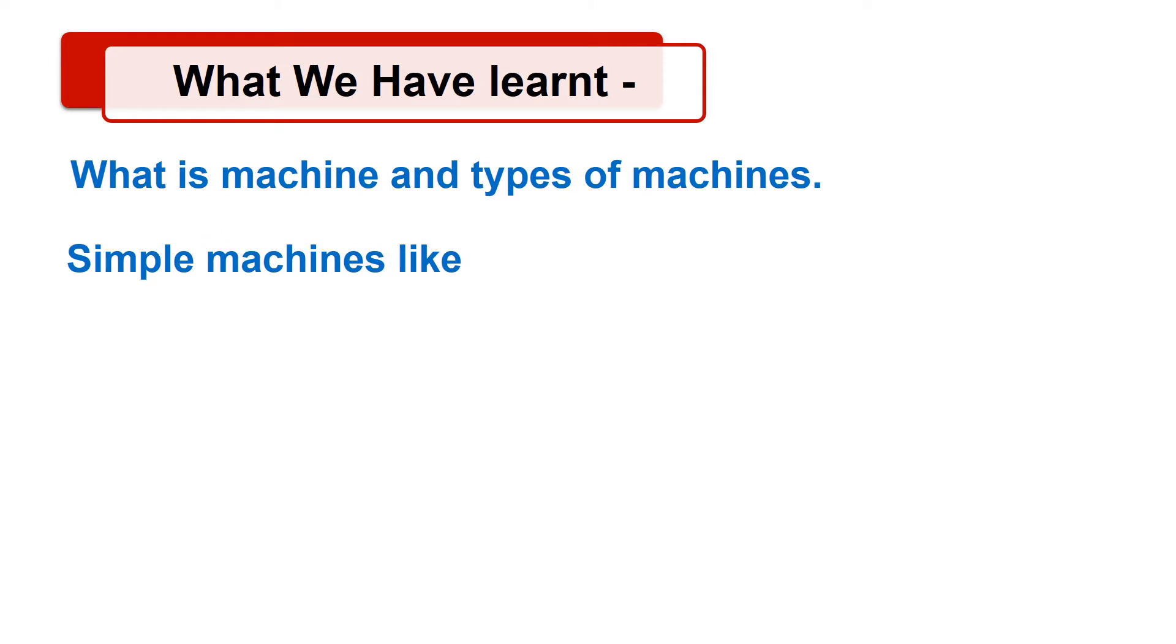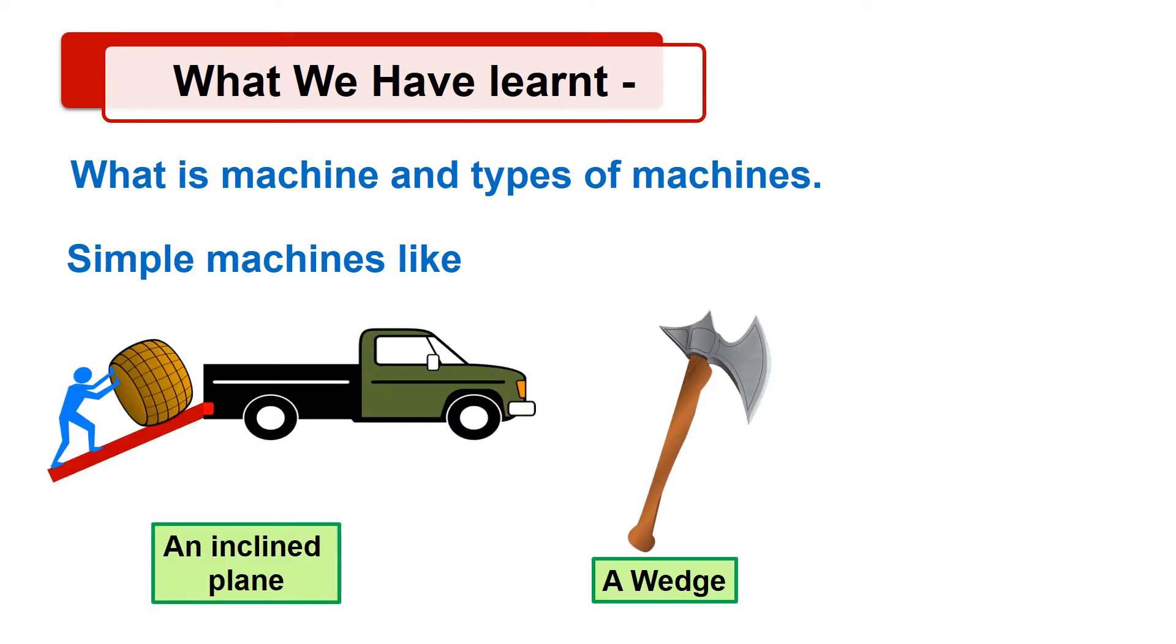In the previous video of this chapter, we saw what is a machine, types of machines, and simple machines like inclined plane, a wedge, a lever, and types of levers. Now, let's see the next topic.